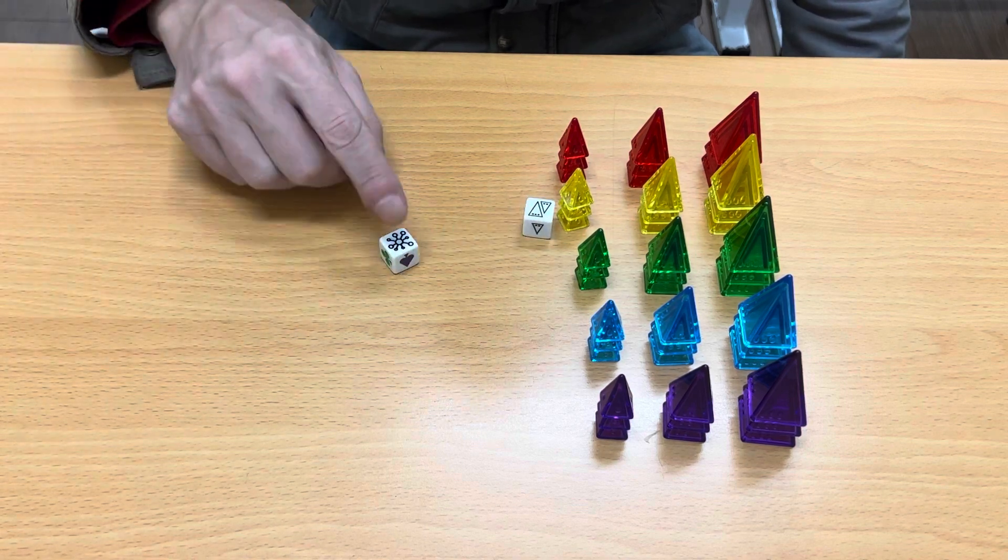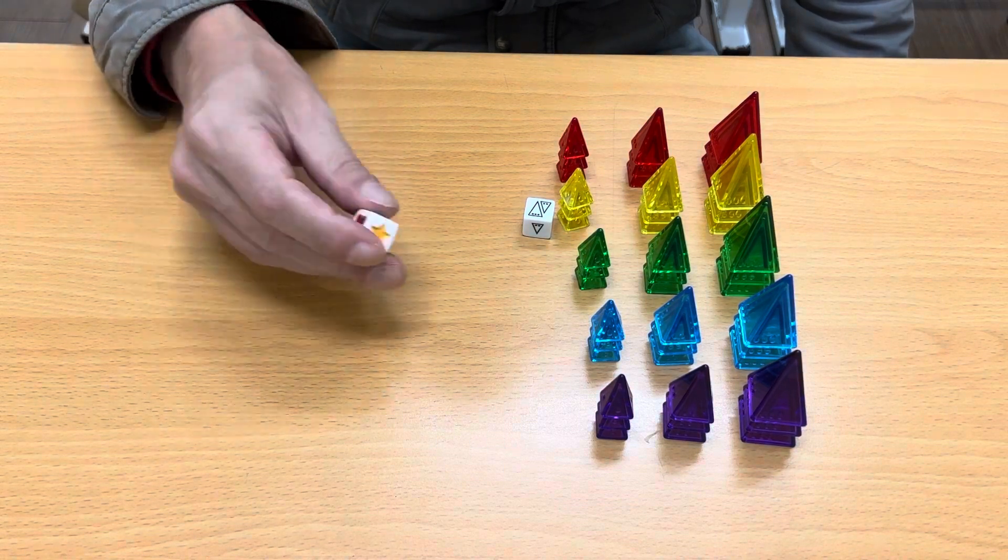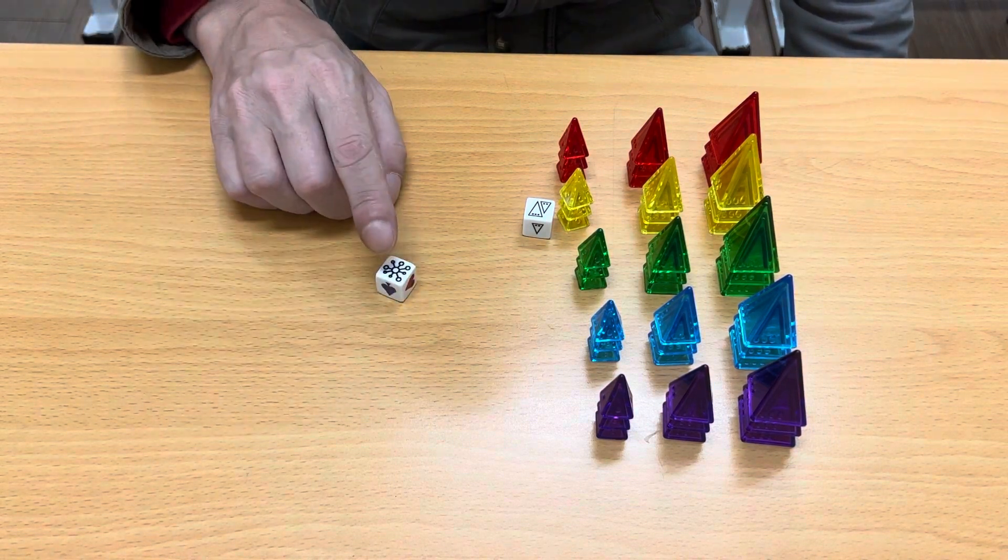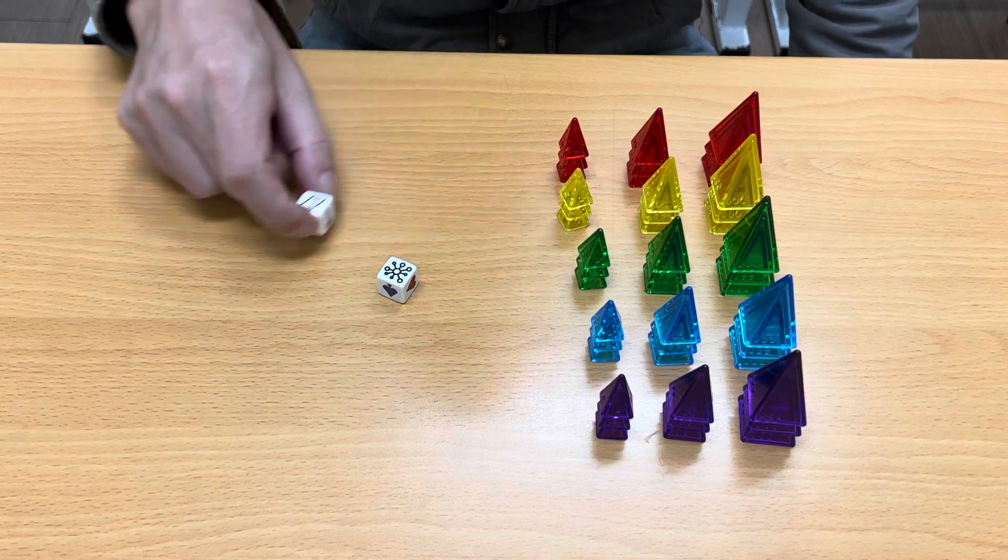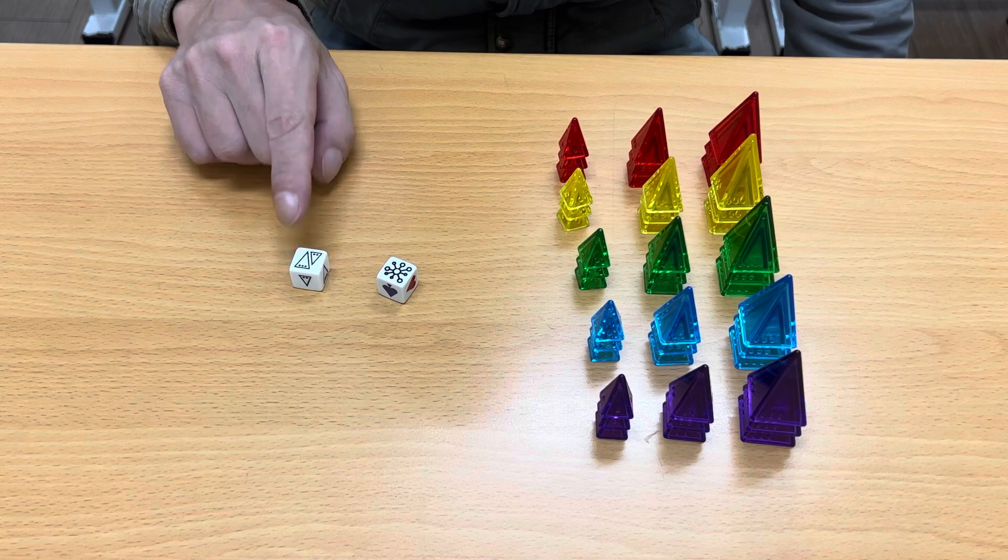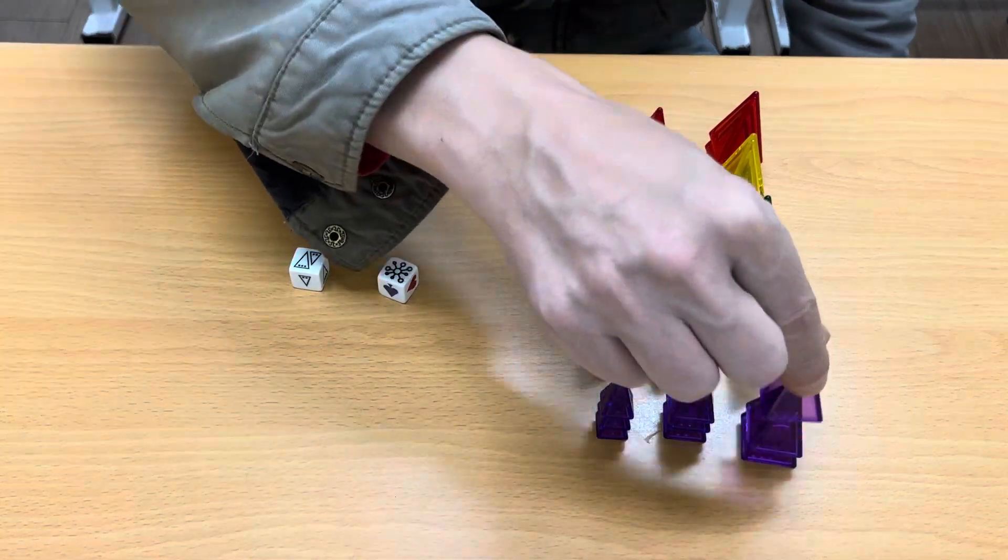So we're going to invite our students up one at a time. A student will roll. Oh, I'm glad this came up. This is the only non-colored side on this dice and it's wild. It's a joker. You can choose. What color do you want? And this one will let you choose between a medium or a large piece. So let's say I choose purple, a big purple.